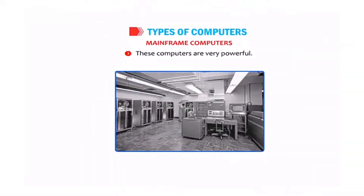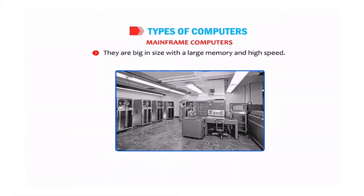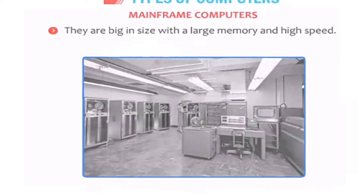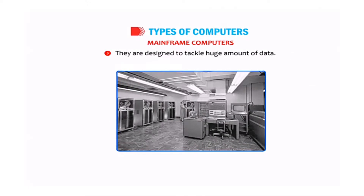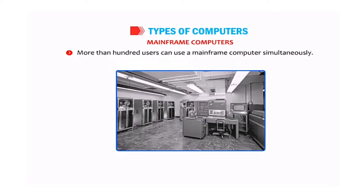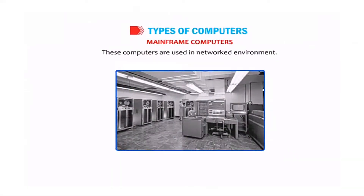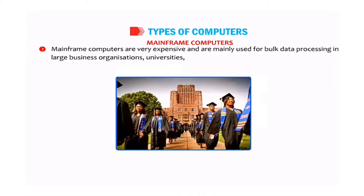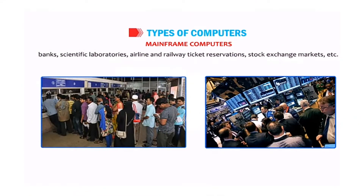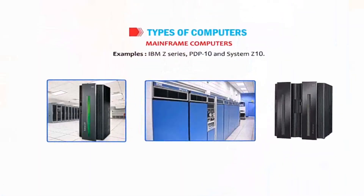Mainframe computers are very powerful — usually big in size with a large memory and high speed, designed to handle huge amounts of data. They can be used simultaneously by more than 100 users and are used in networked environments. Mainframe computers are very expensive and are used for bulk data processing in large business organizations, universities, banks, scientific laboratories, airline and railway ticket reservation, stock exchange markets, etc. Examples include IBM Z-series, PDP-10, and System Z-10.